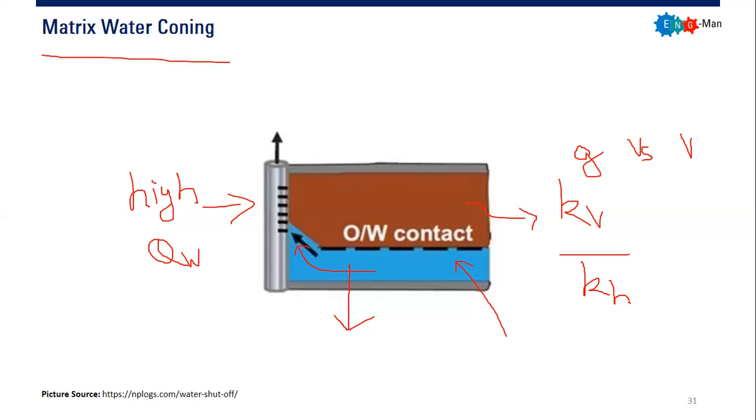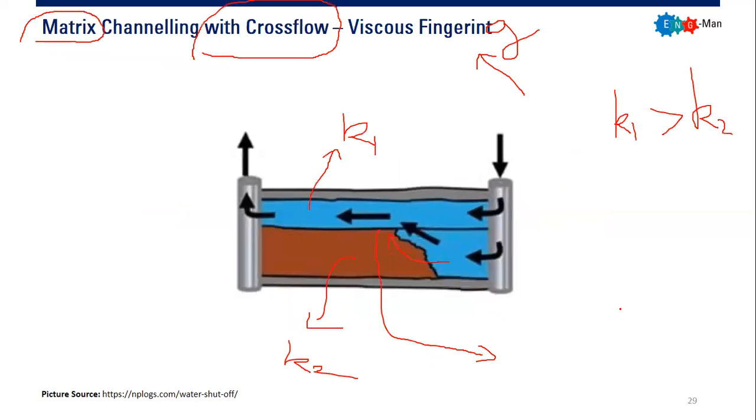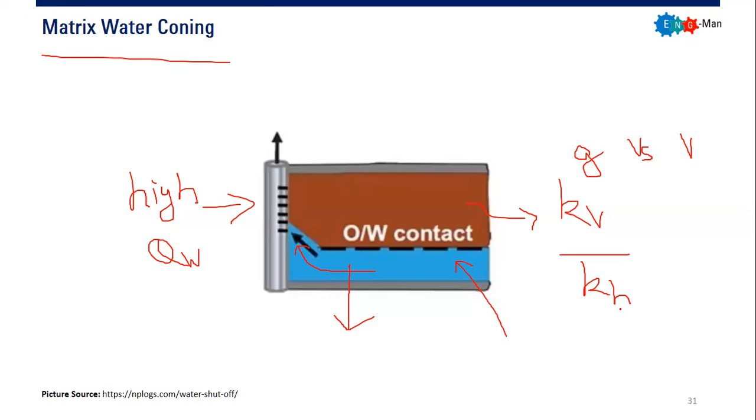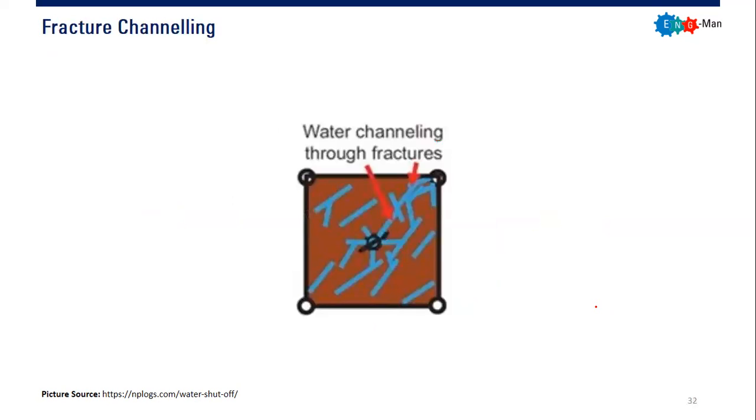So these are the problems we have: first, second, third, fourth, and fifth. And the next one is fracture channeling. It's very clear just by the name. It's channeling, but not occurring mainly because of the matrix permeability, but because of fractures. Generally, in most cases, permeability of fractures will be high, so water will move faster across the fracture compared to across the matrix.